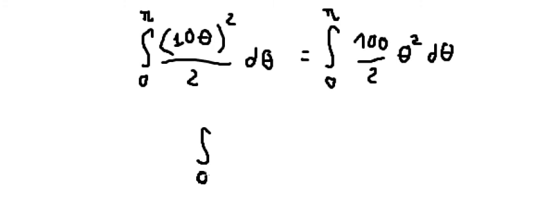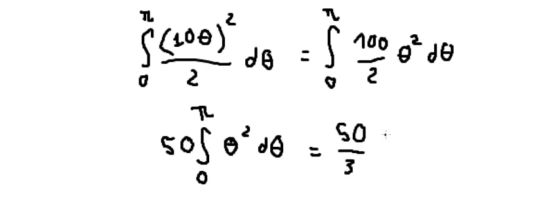This is the integral from 0 to π of 50θ² dθ. Integrating, we get 50 over 3, theta cubed, and we have the boundary from 0 to π.